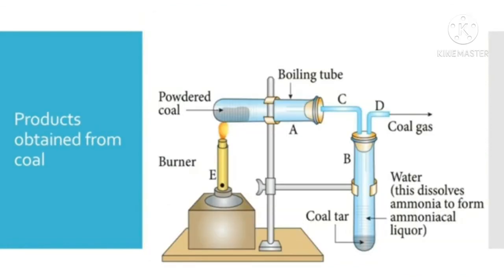Coal when heated in the absence of air does not burn but produces many by-products. This process of heating coal in the absence of air is called destructive distillation of coal. Thousands of different products have coal or coal by-products as their components. Some of them are soap, solvents, dyes, plastics and fibers such as rayon and nylon. The main by-products obtained during destructive distillation are coke, coal tar, ammonia and coal gas.